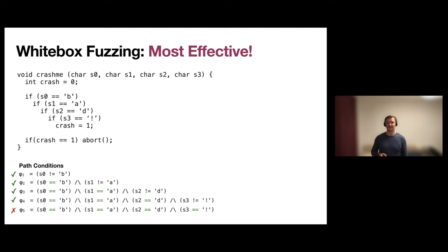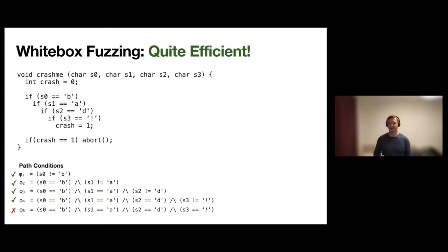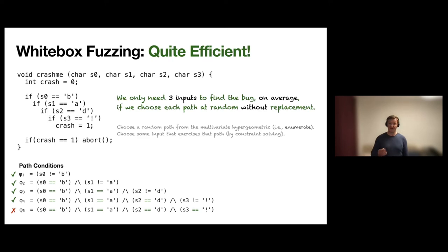White box fuzzing is most effective because it can find all the bugs. In principle it can prove the absence of a bug — in this case the reachability of the abort statement — simply by enumerating all paths in your program. Of course we're making some assumptions, but in principle symbolic execution can prove the absence of bugs. It's also quite efficient: you only need to generate five inputs. But if you select each path uniformly at random without replacement, on average you'd find this bug using only three inputs.